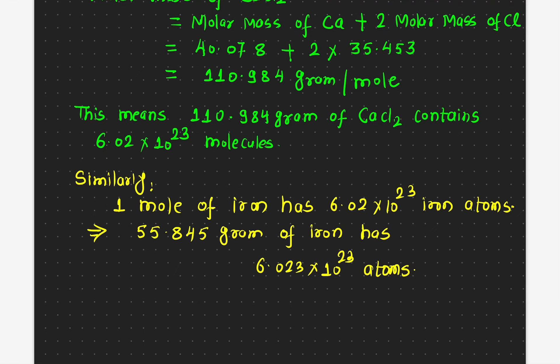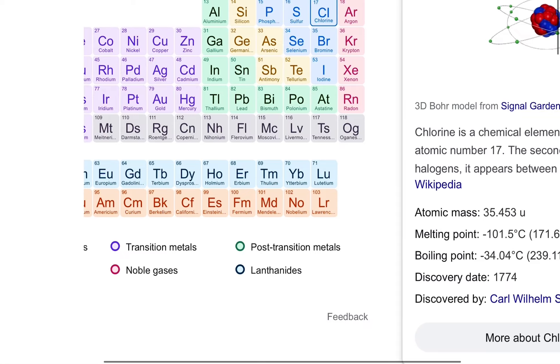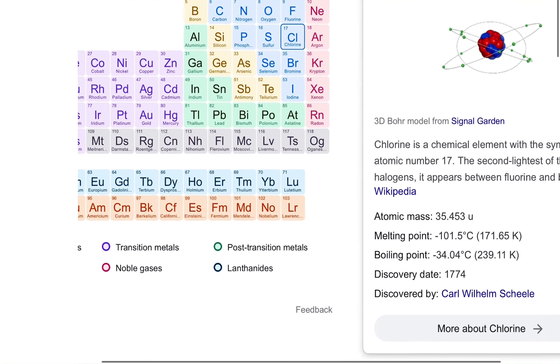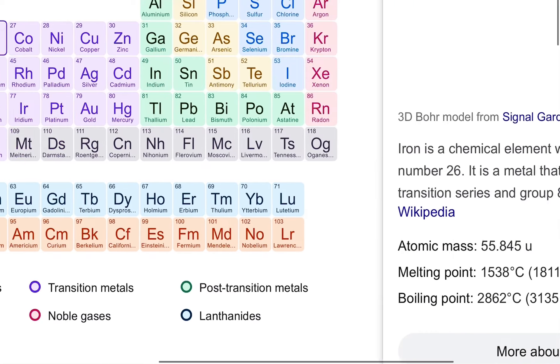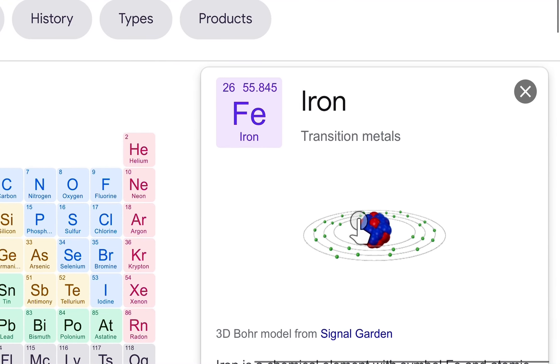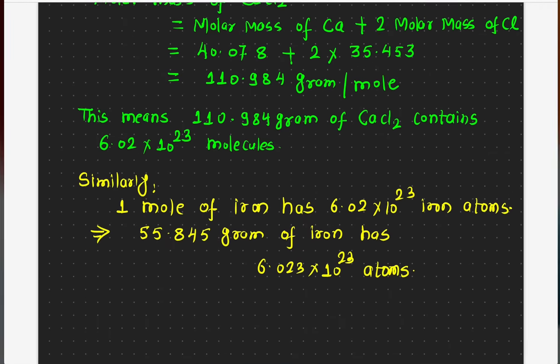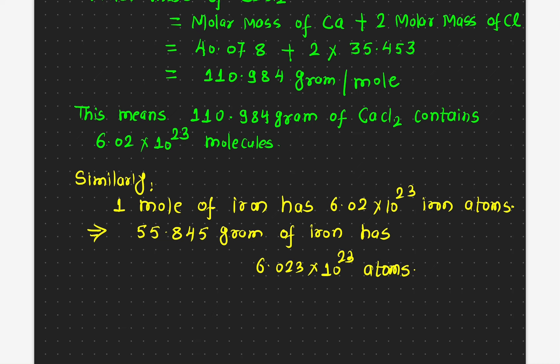And further explaining about one mole, let's say if you look at iron. Iron, 55.845. If you look at this number here, 55.845, so what does this number mean? If I take 55.845 grams of iron, then the number of atoms it will have will be this number.